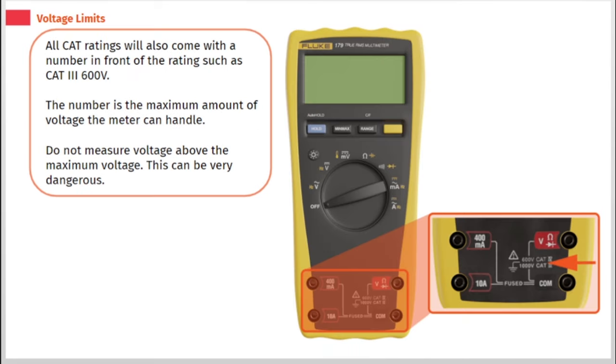All CAT ratings will also come with a number in front of the rating such as CAT 3 600 volt. The number is the maximum amount of voltage the meter can handle. Do not measure voltage above the maximum voltage. This can be very dangerous.